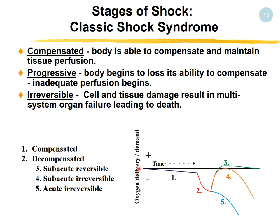Looking at the oxygen delivery-demand graph: the first phase is compensated. Next is the decompensated stage. At the beginning — the subacute reversible phase — if you act right away and treat the patient, they can return to normal and survive the shock. In the irreversible phase, the patient may initially respond to treatment, but after a while it becomes irreversible. The acute irreversible phase as a continuation of decompensation leads to death very quickly.